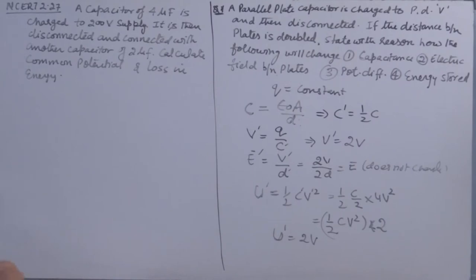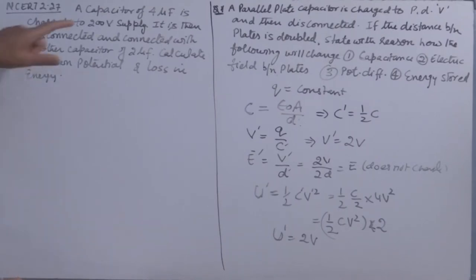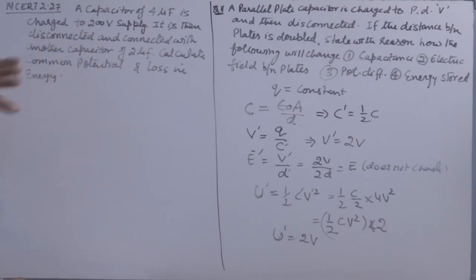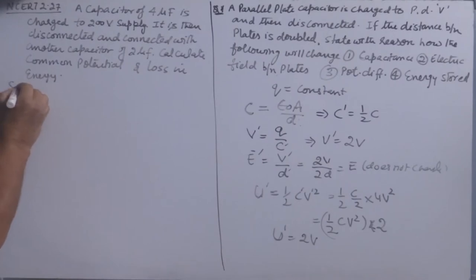Now the second question, NCERT question 2.27: a capacitor of 4 microfarad is charged to a 200 volt supply. It is disconnected and then connected to another capacitor of 2 microfarad. Calculate the common potential.